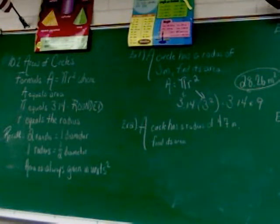So the circle has a radius of 4.7 inches. Find its area.